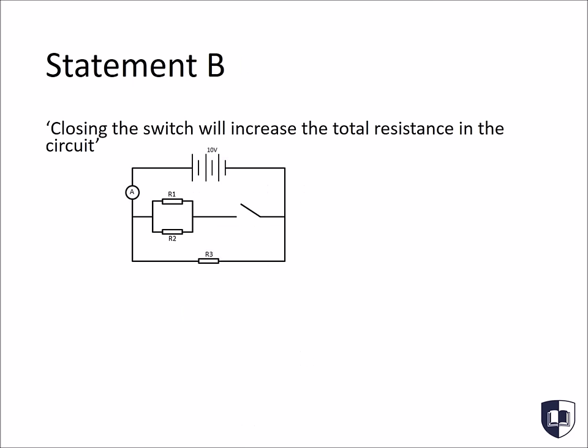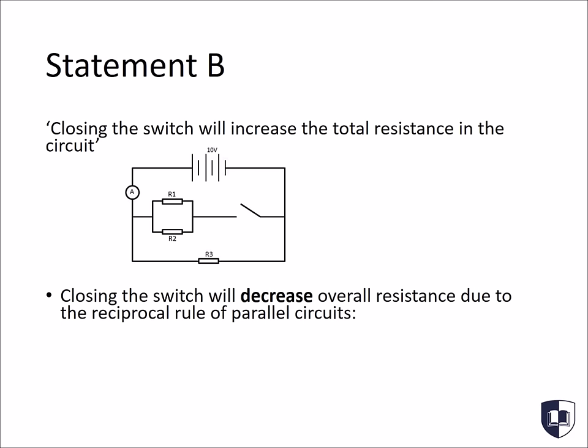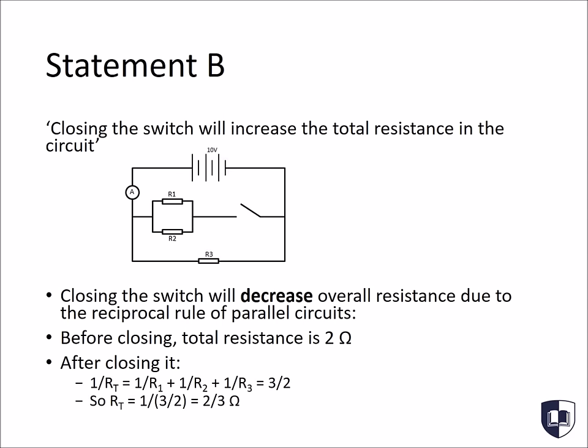So, if we now go back and look at statement B again, we see it's incorrect, as closing the switch will decrease, not increase, the overall resistance. When the switch is open, you have a simple series circuit. And, as the question told you, you know the resistance across each component is 2 ohms, so the total resistance will simply be 2 ohms. But, if you apply the reciprocal rule to the new parallel circuit which is formed by closing the switch, then the total resistance now becomes 2 thirds ohm instead of 2 ohms, which is less.